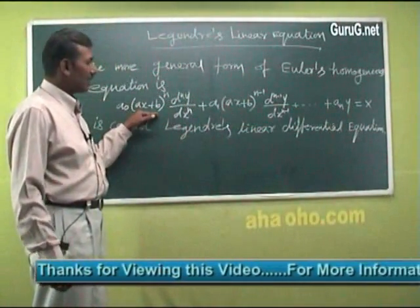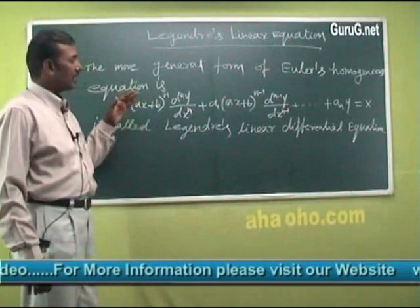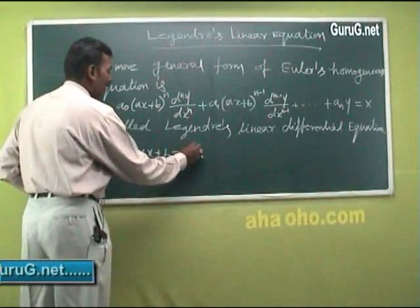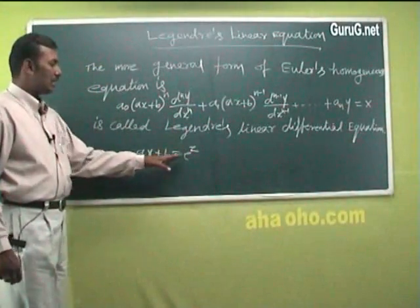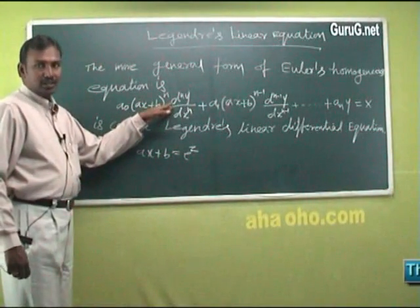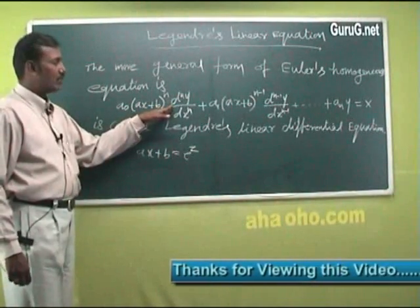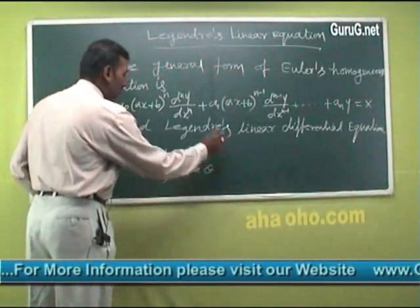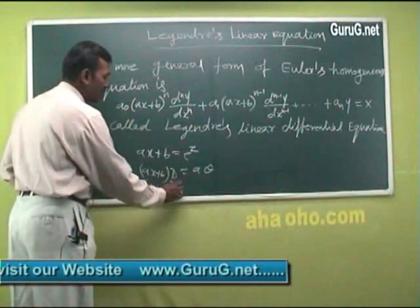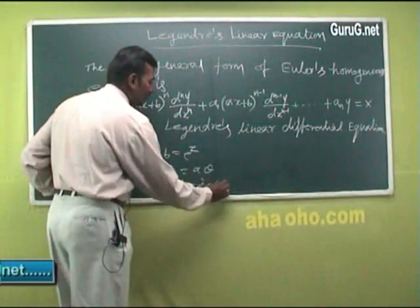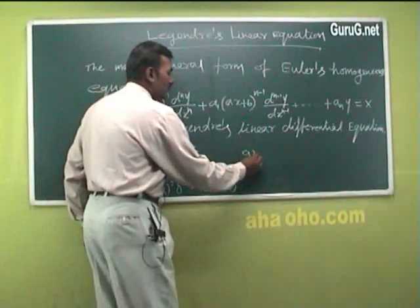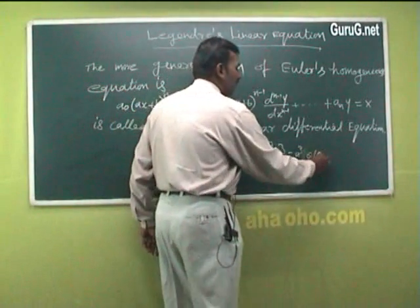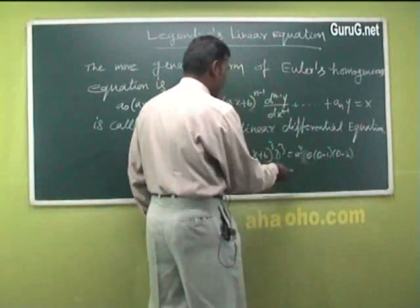The solution of this differential equation is obtained by converting it into a differential equation with constant coefficients using the transformation ax+b = eᶻ. Under this transformation: (ax+b)D = a·θ, (ax+b)²D² = a²·θ(θ−1), and (ax+b)³D³ = a³·θ(θ−1)(θ−2), and so on.